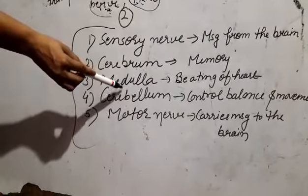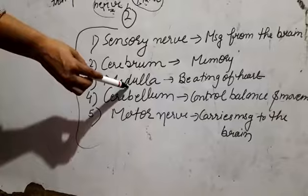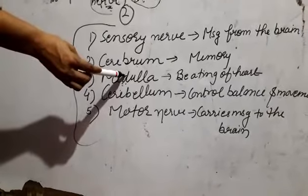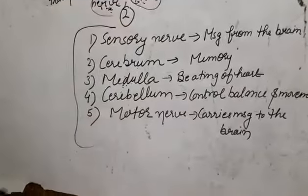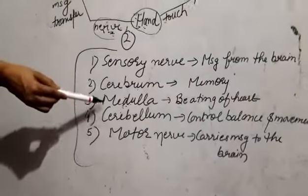What is the medulla? The medulla is the brain stem root. It is attached to our spinal cord. What does it control? The beating of the heart. Our heartbeat is an involuntary action.